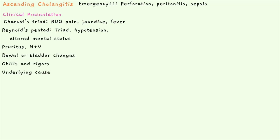Other symptoms to be aware of are pruritus or itchiness due to increased bilirubin from the obstruction, nausea and vomiting secondary to pain, bowel or bladder changes including constipation or diarrhea as well as urinary retention or increased urinary frequency, and chills and rigors especially if the patient is septic. You may also have symptoms related to the underlying cause.